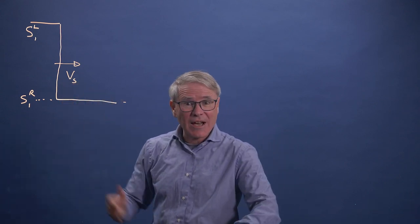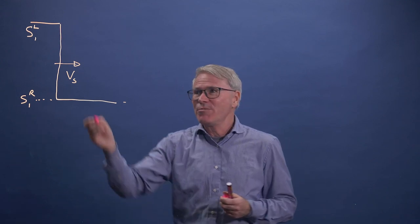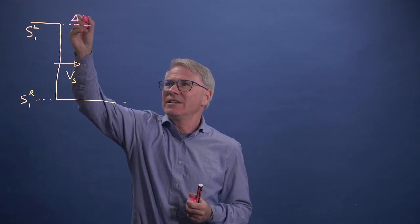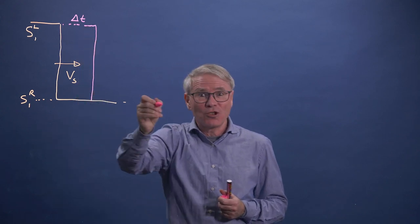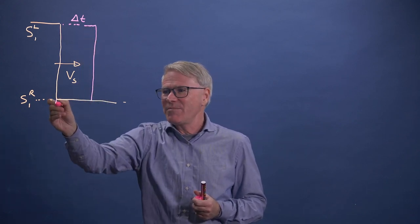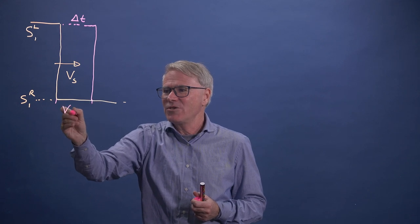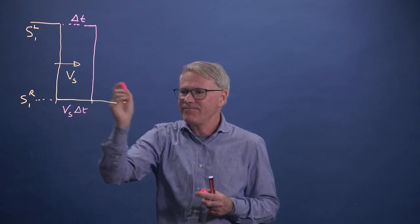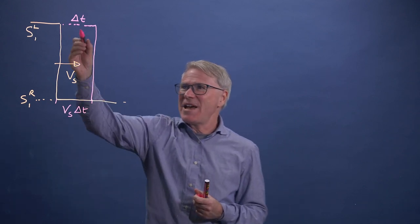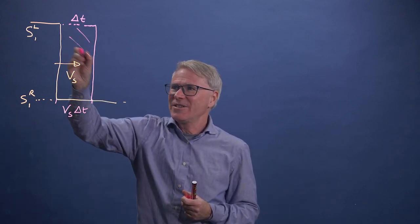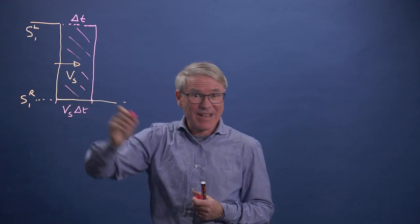So we'll consider that we just look at a small time increment, a time delta T. And in that time delta T, the shock has moved. And how far has it moved? This distance will be V shock times delta T. Now we're going to invoke conservation of mass. So we're going to look at the mass that's essentially within this area here.